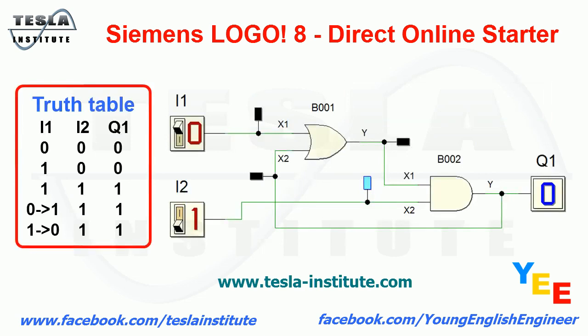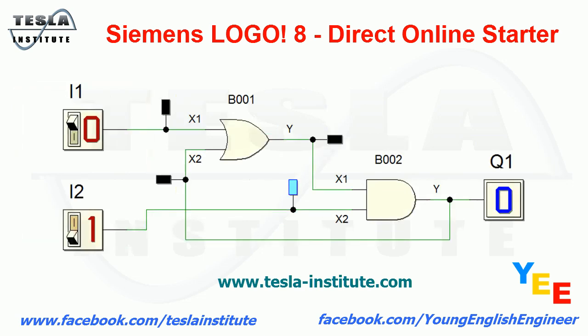In a truth table we can see all possible states of output Q1 depending on the input states. At the beginning, when input I1 is in a low state and input I2 is in a high state, output Q1 is in low state. Then when we change input I1 state to high, output Q1 goes to high state. When we change input I1 back to low, output Q1 stays in high state.